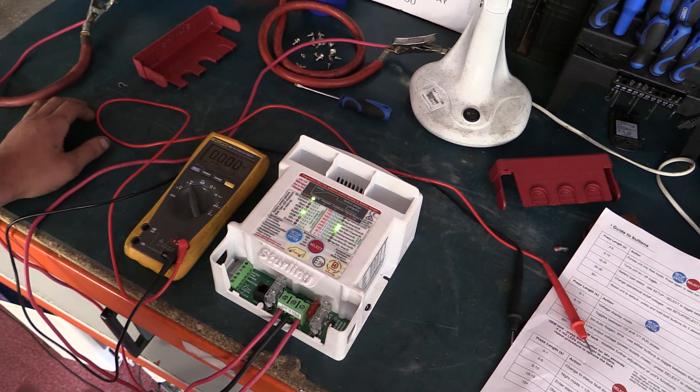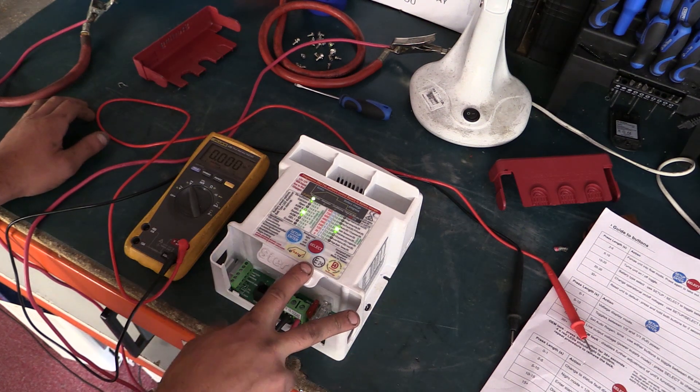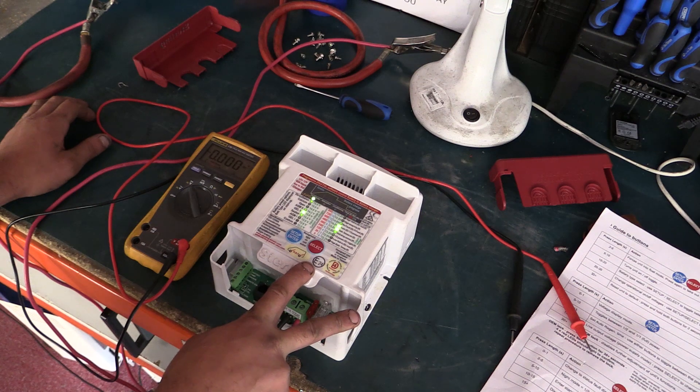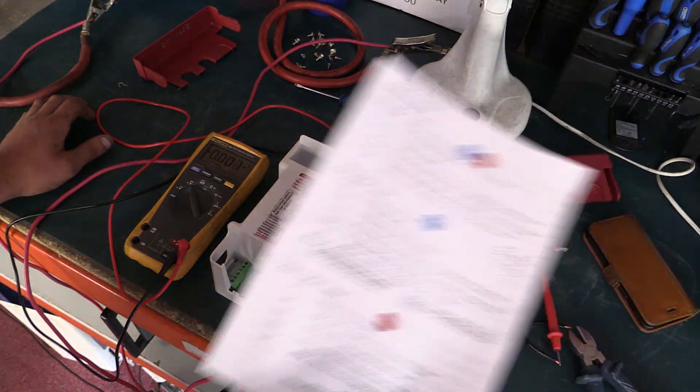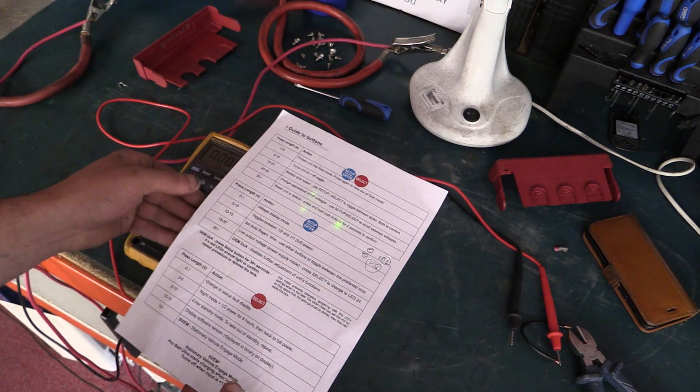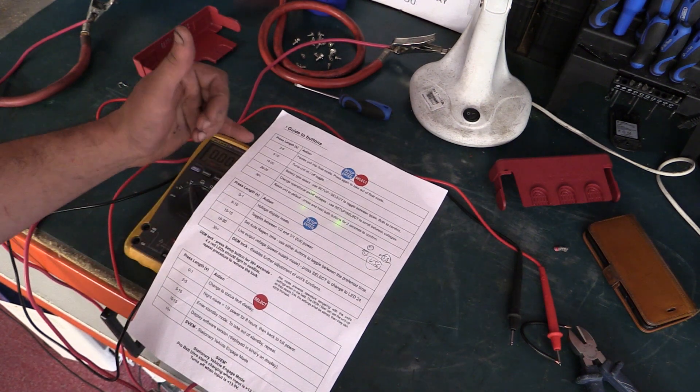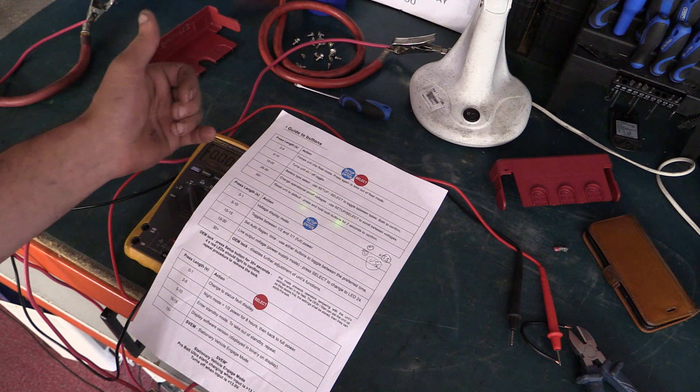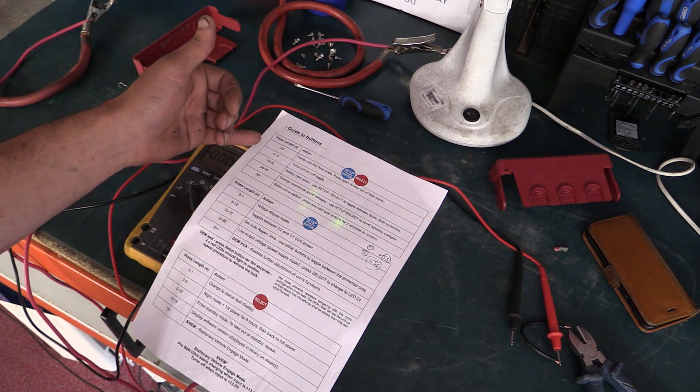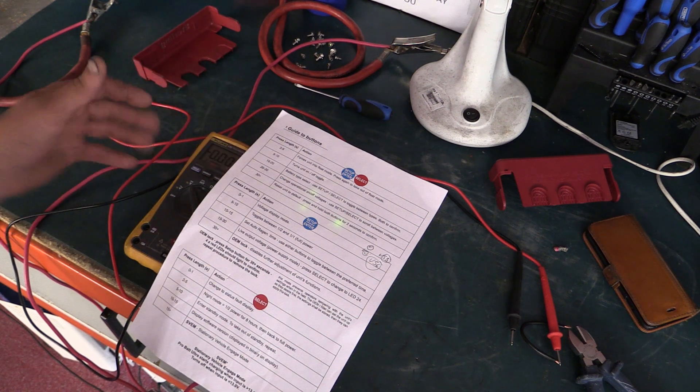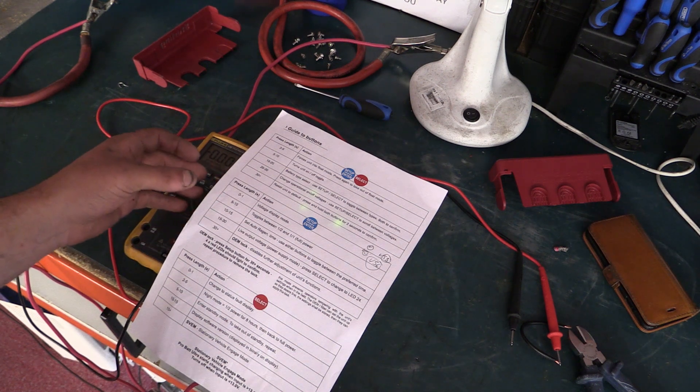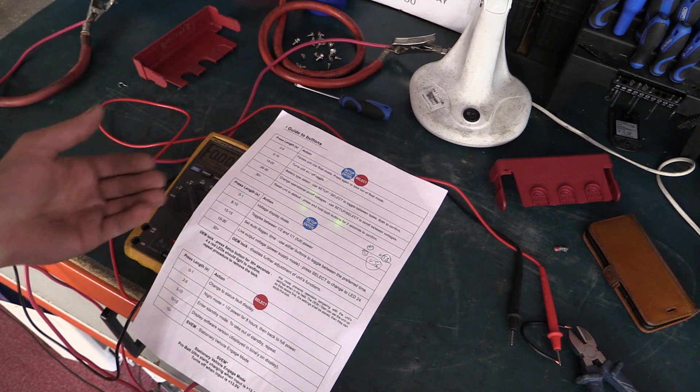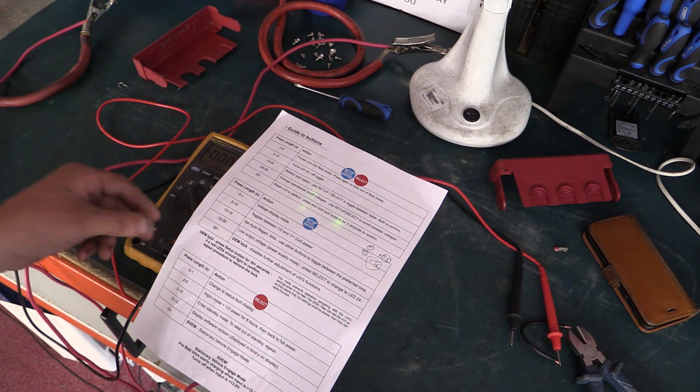The common thing that people are doing with these units is accidentally putting the unit into off mode. If we have a look at the breakdown sheet here, if you push both of the setup and select buttons down together for 5 to 10 seconds, it toggles the unit off. To toggle the unit back on, I'm going to show you the correct process of doing it.